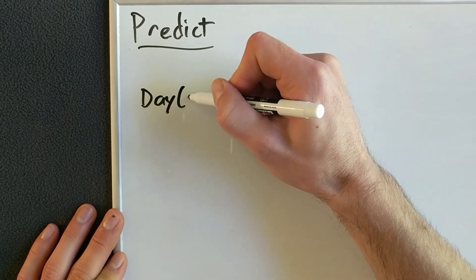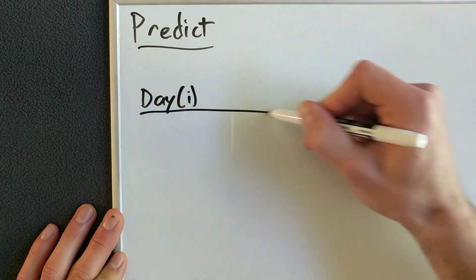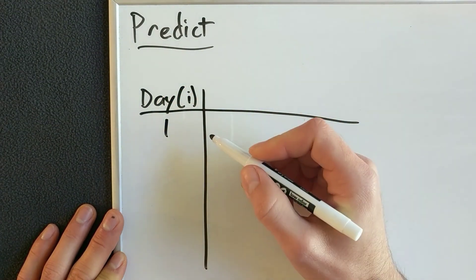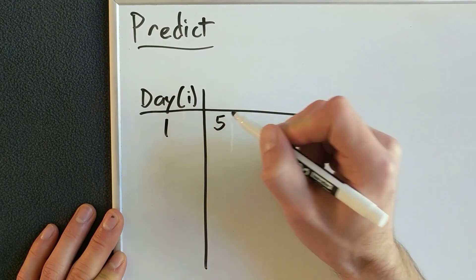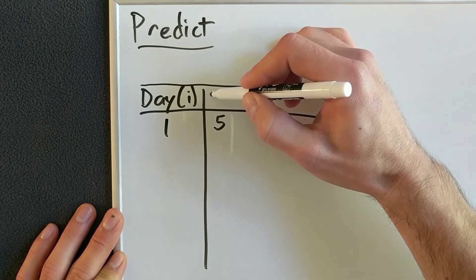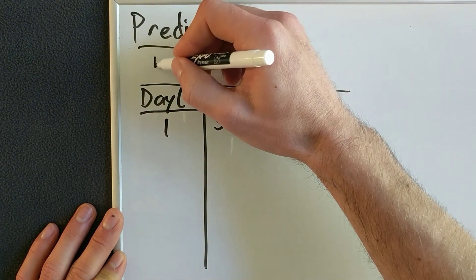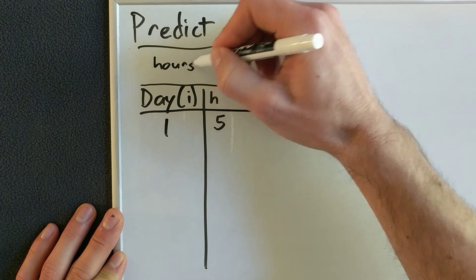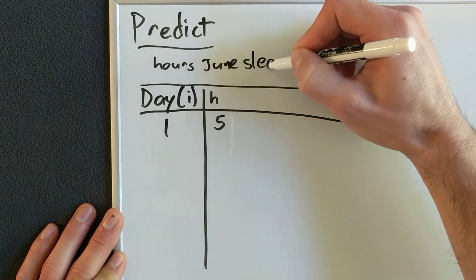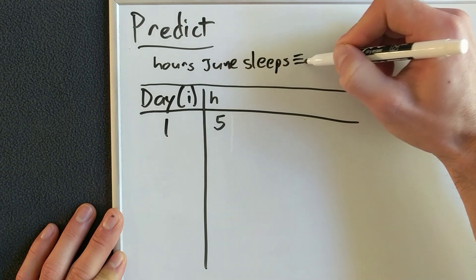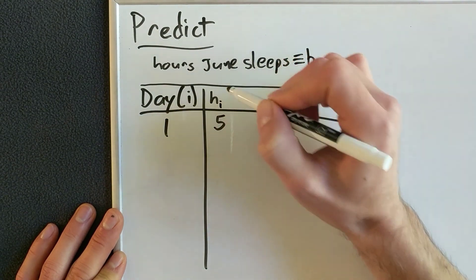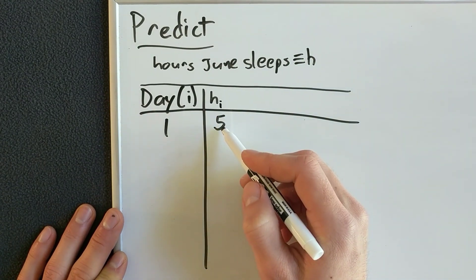So I'm going to call the days i. And on day one, June slept five hours. And I'm going to call the hours that June sleeps H. So hours June sleeps is defined as H. And then I'll do H sub i to indicate which day. So this would be H sub one.